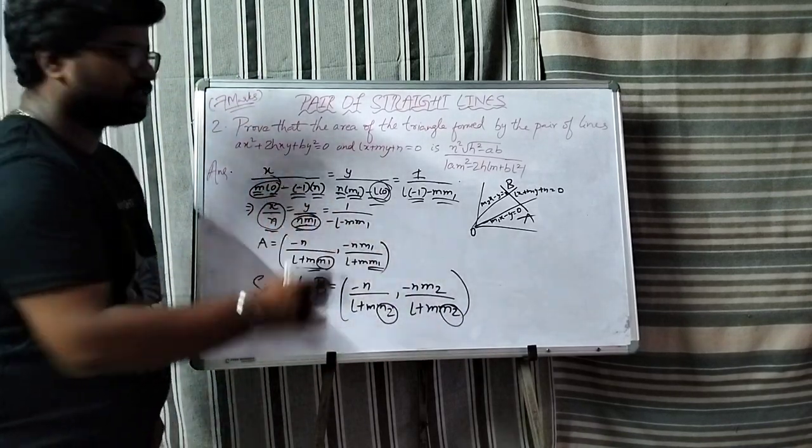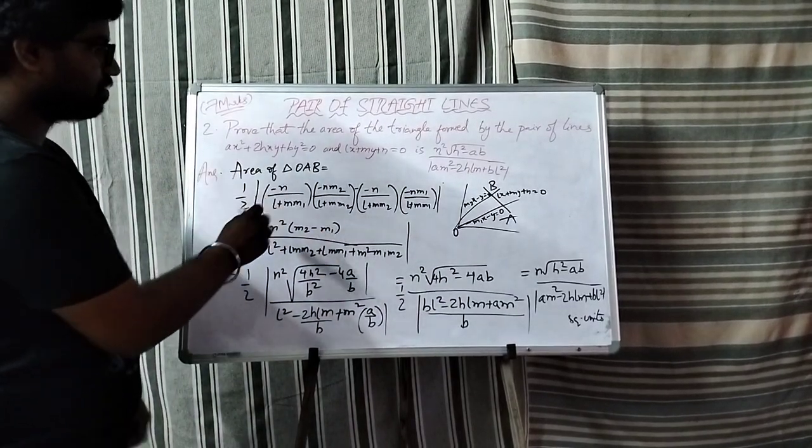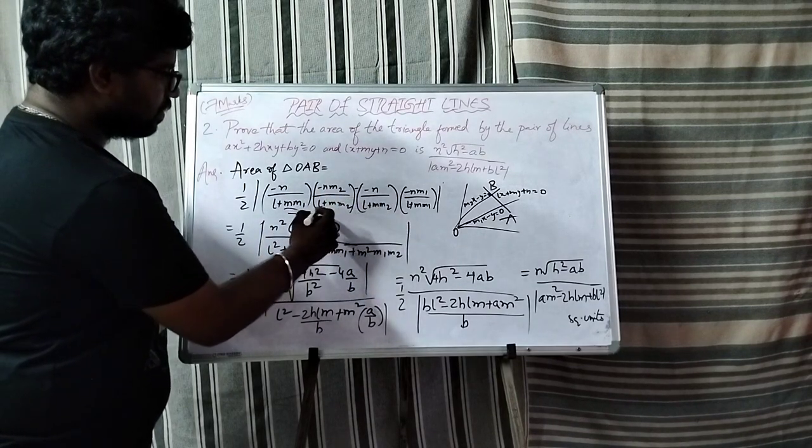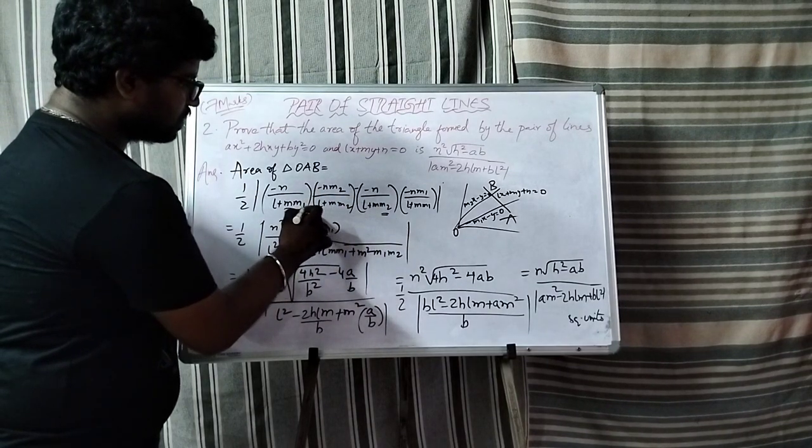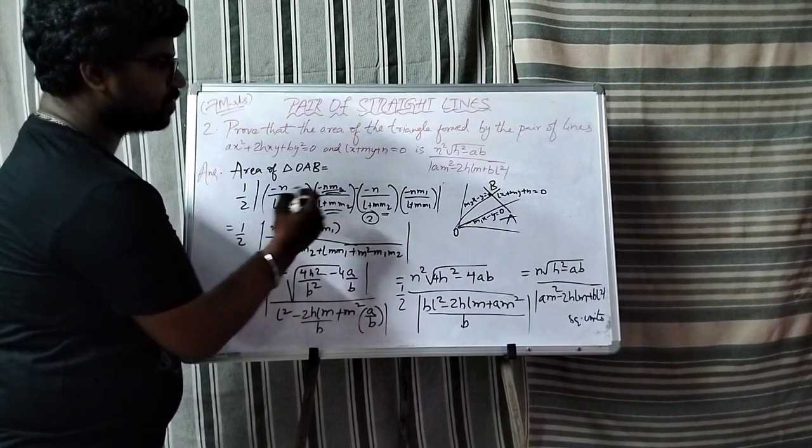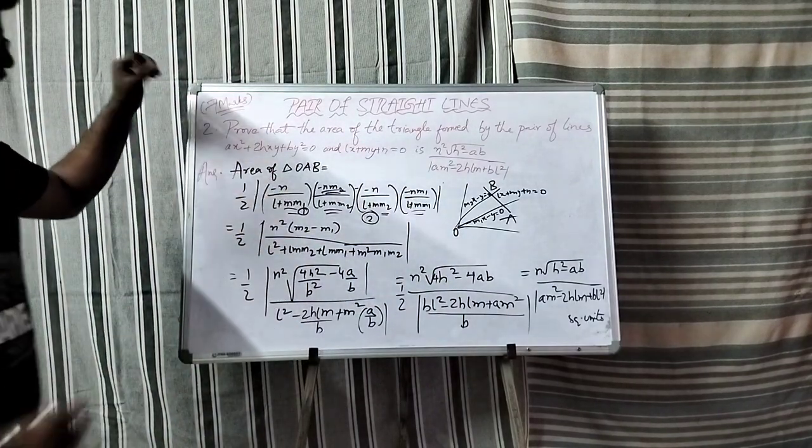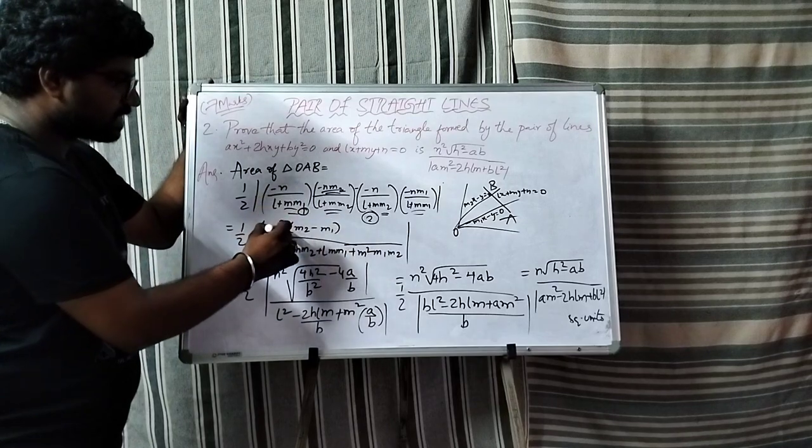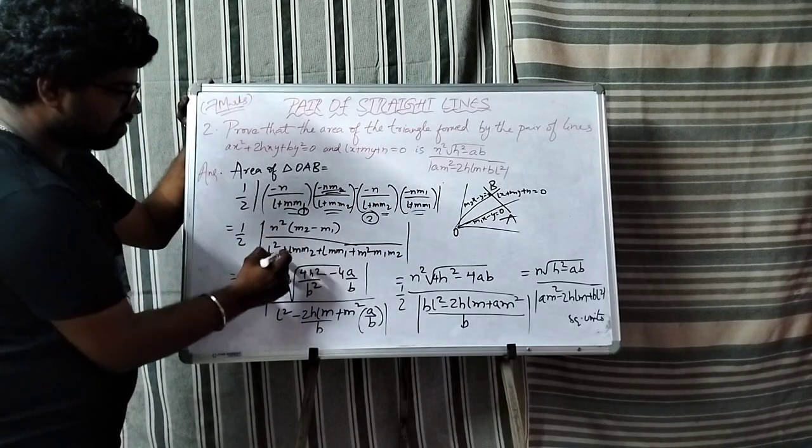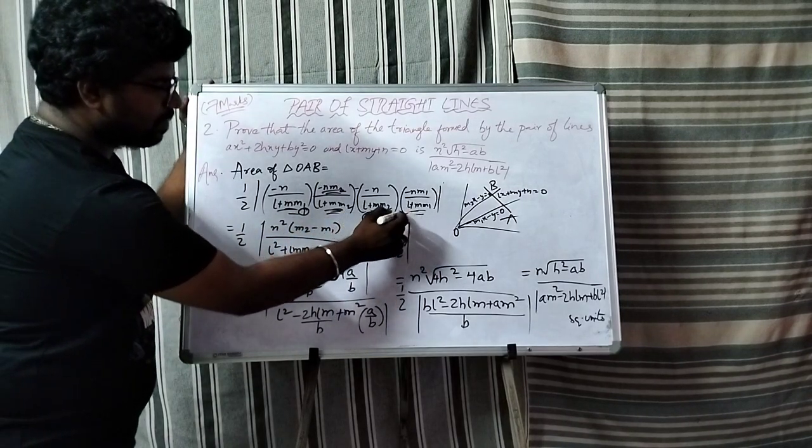Area of triangle OAB is half modulus of minus n by l plus mm1 and minus n by l plus mm2. This gives n square into m2 minus m1 divided by the denominator.